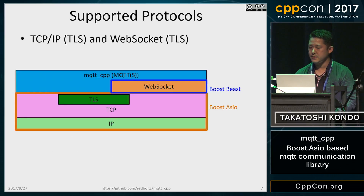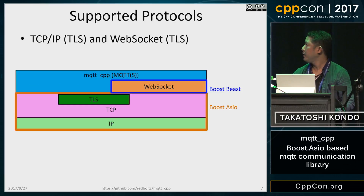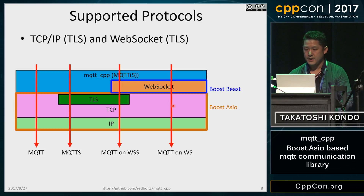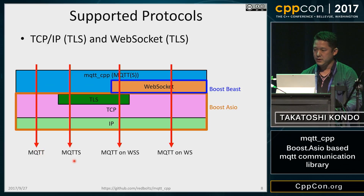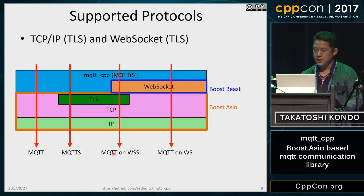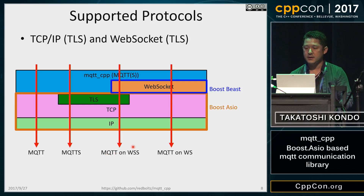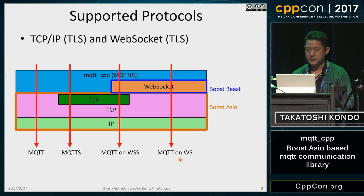MQTT CPP supports four variations of MQTT connection. Here is a protocol stack from left to right: MQTT on TCP, MQTT TLS on TCP — usually called MQTTS — MQTT on WSS, the TLS version of WebSocket, and MQTT on WebSocket. Thank you for Boost Beast.